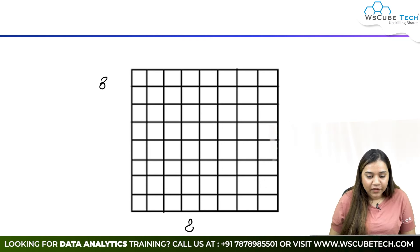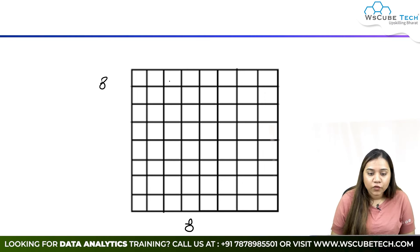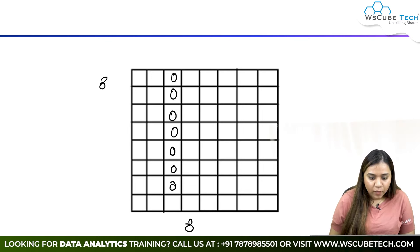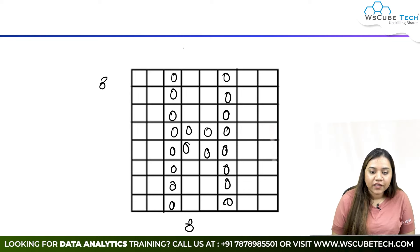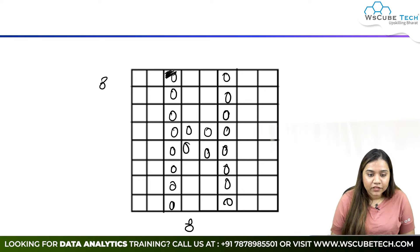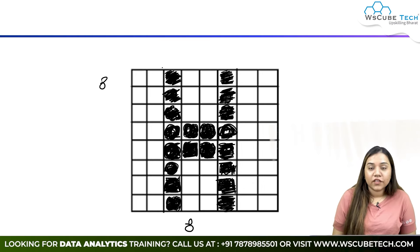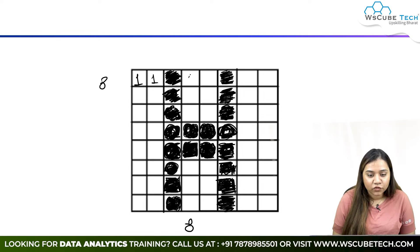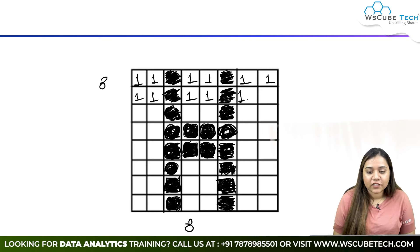If I want to write the alphabet H on this 8 by 8 grid, I'll place zeros to form the shape of H. Wherever there is a zero, a black color will appear in that block. I've darkened the area with zeros, and for the white color I'll write ones — so one represents white and zero represents black.